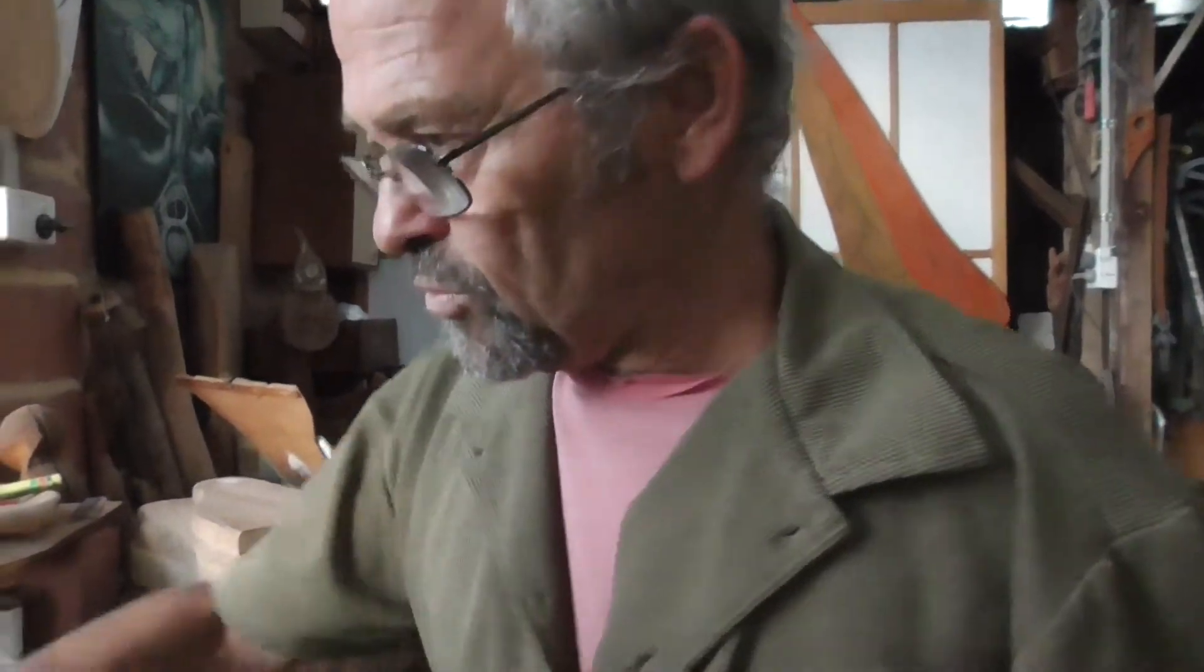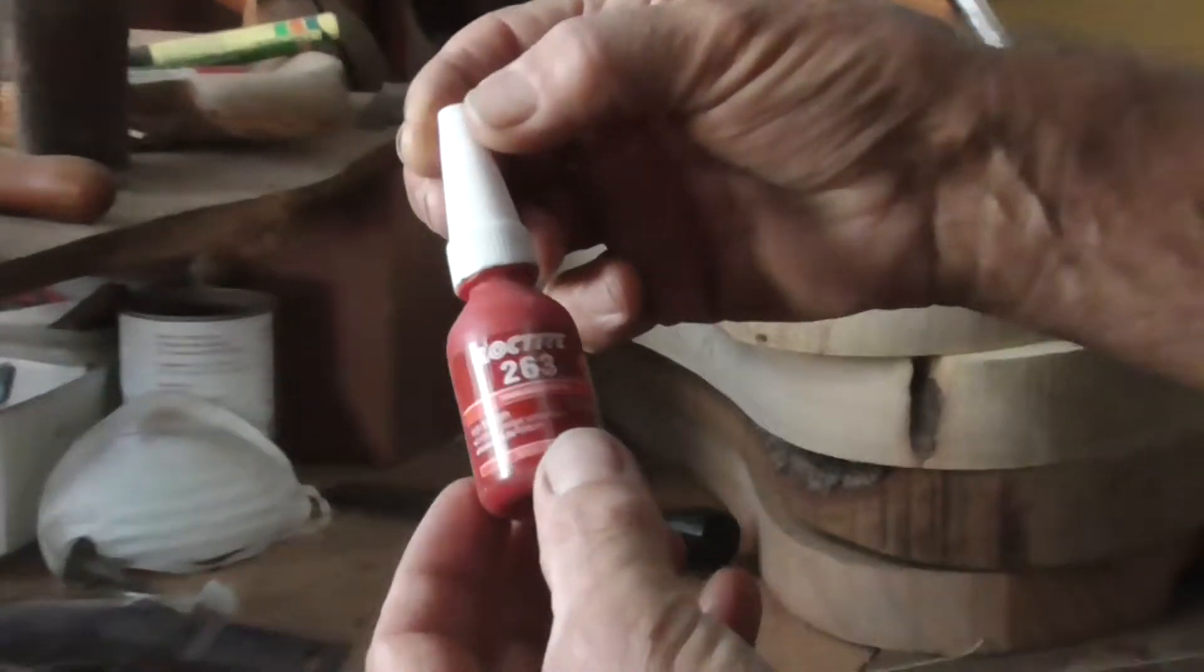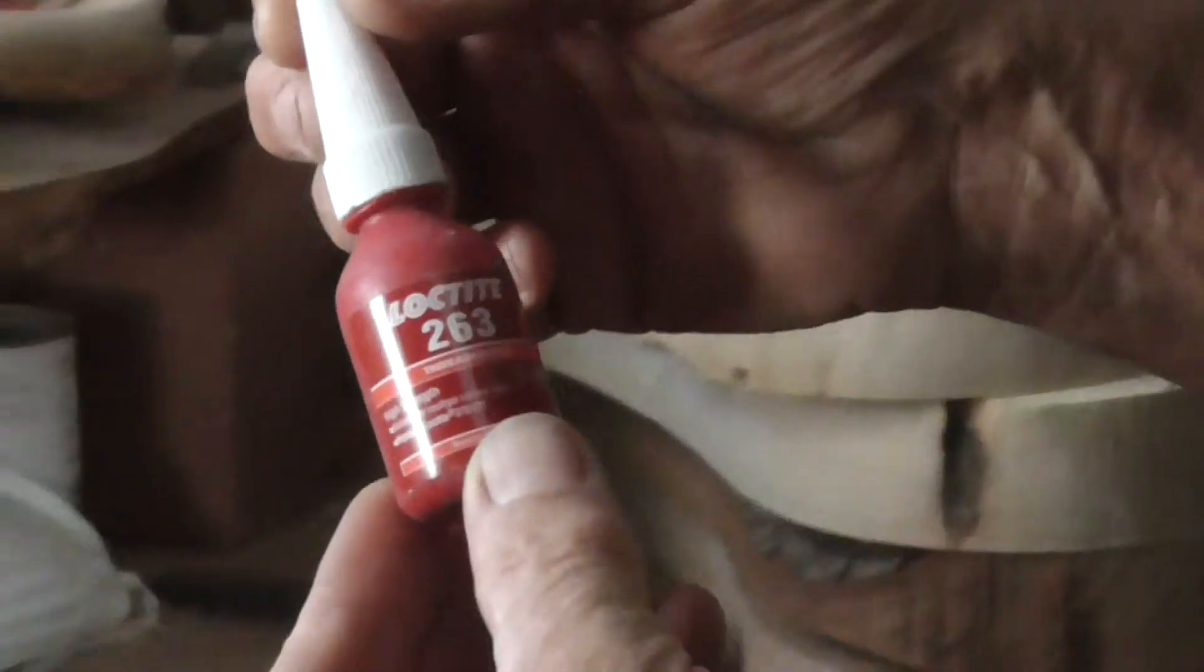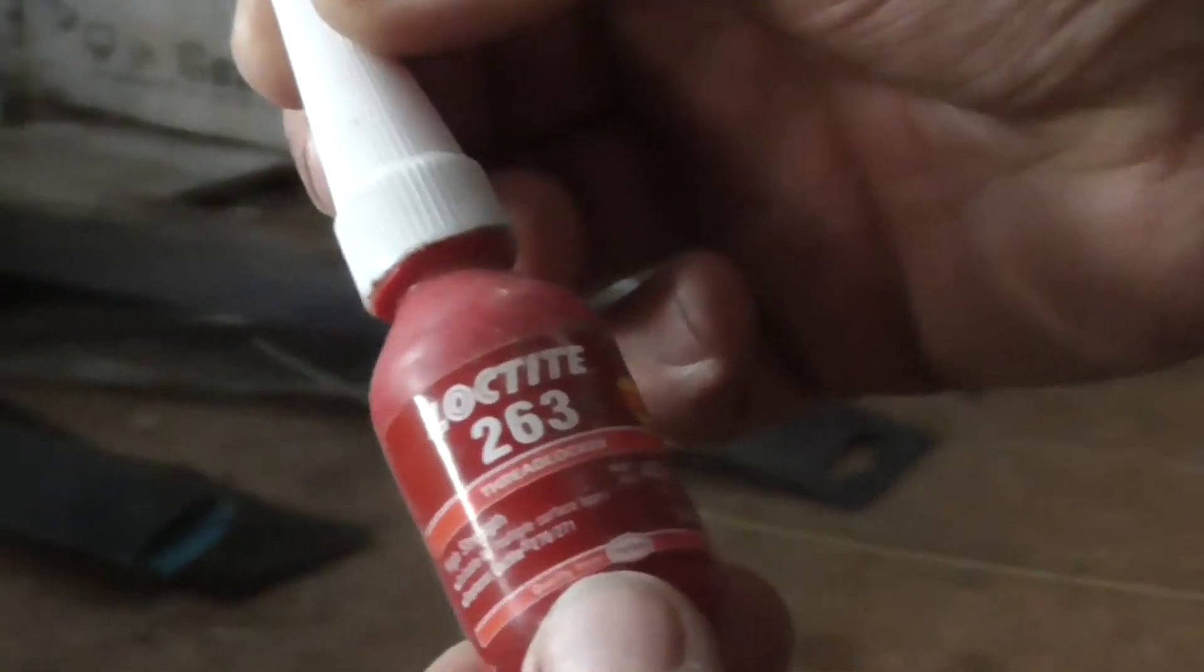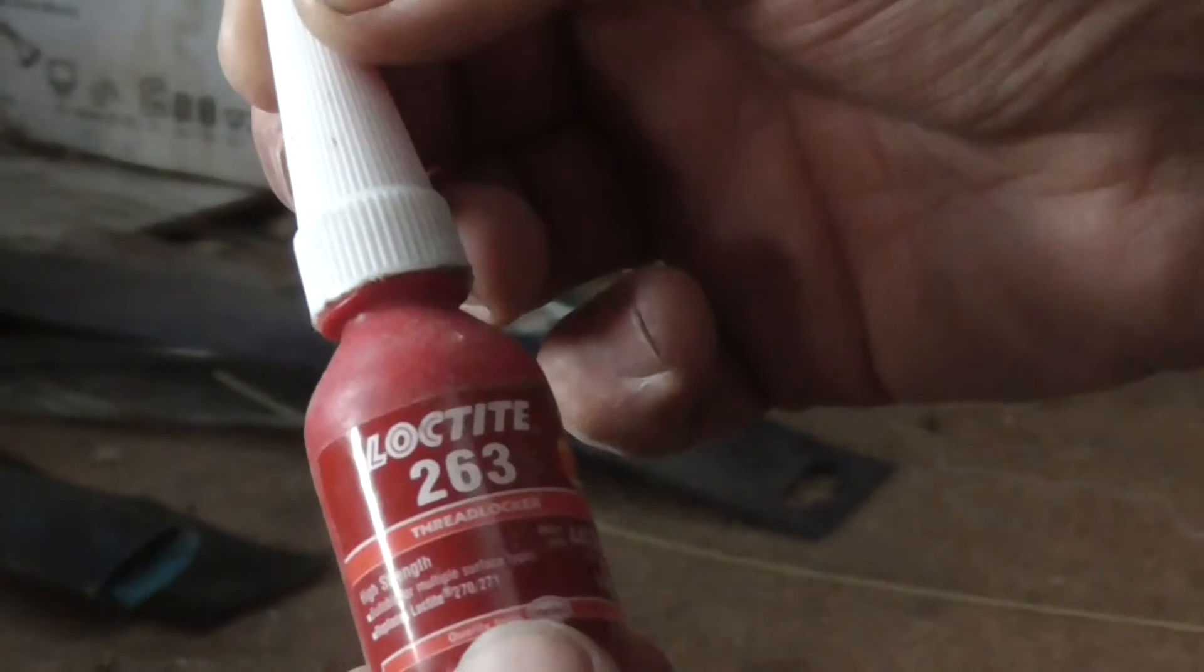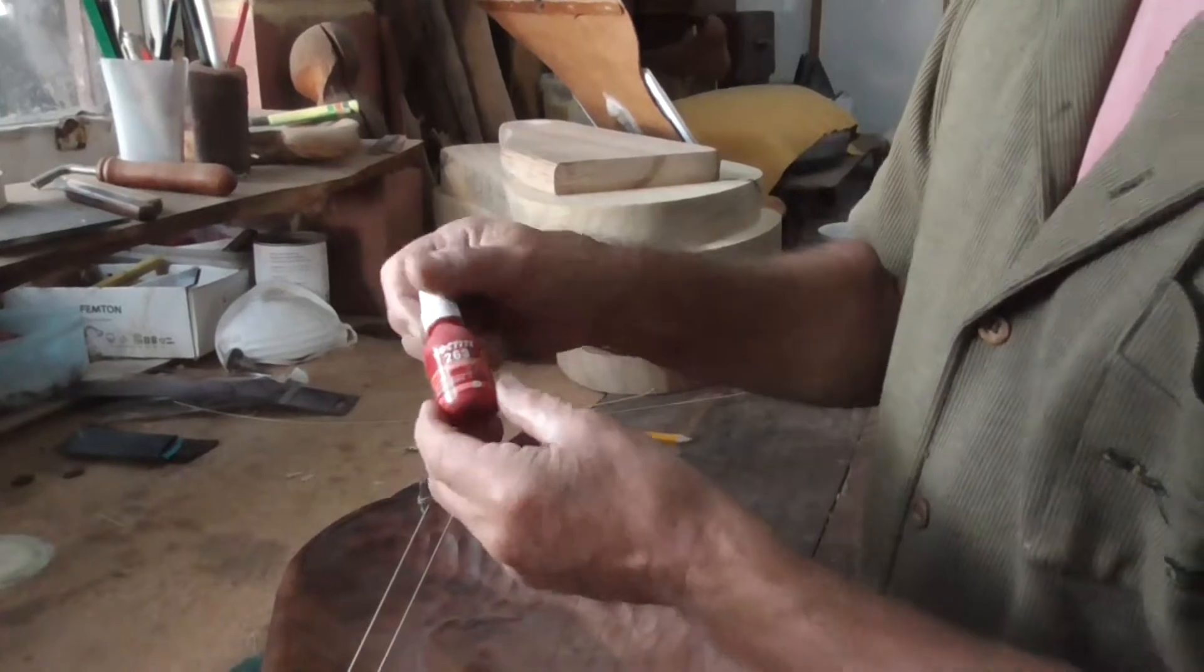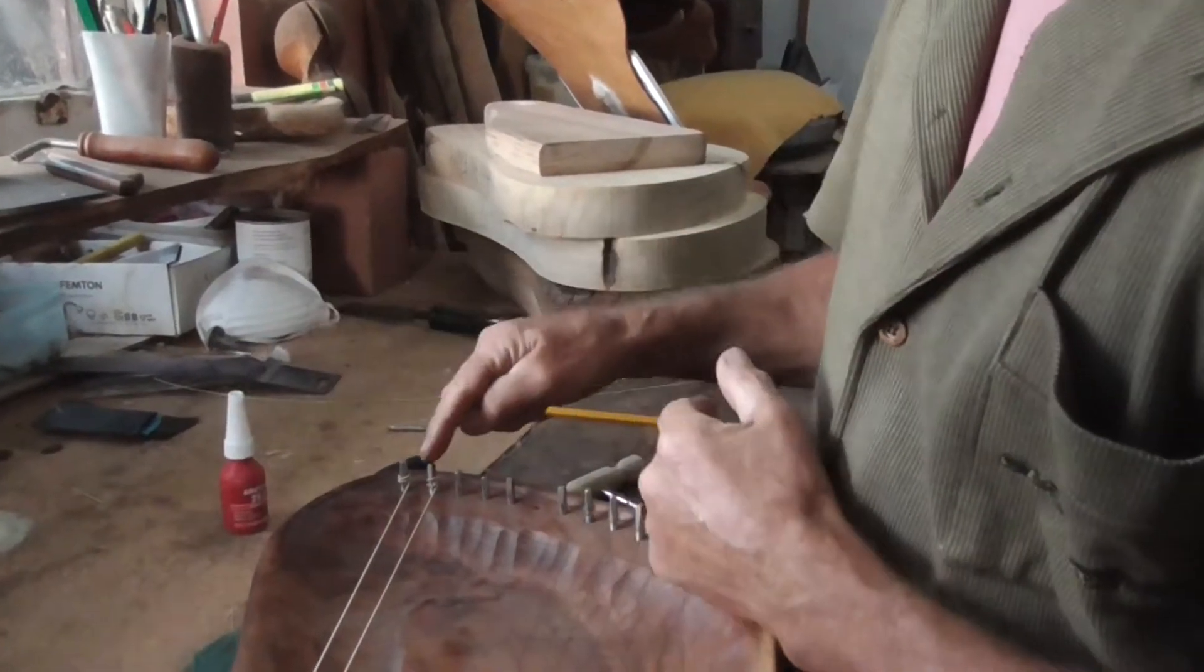There's a beautiful glue called the Loctite 263, and that's actually high strength - that's the better one, best to use. I'll show you how to use this and make sure that pin stops slipping.